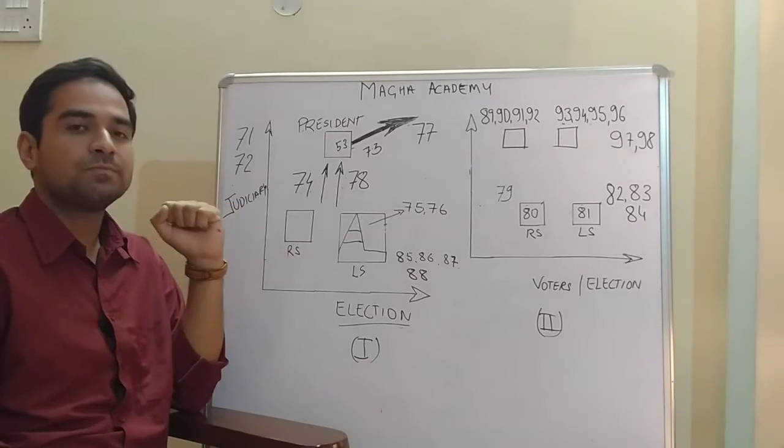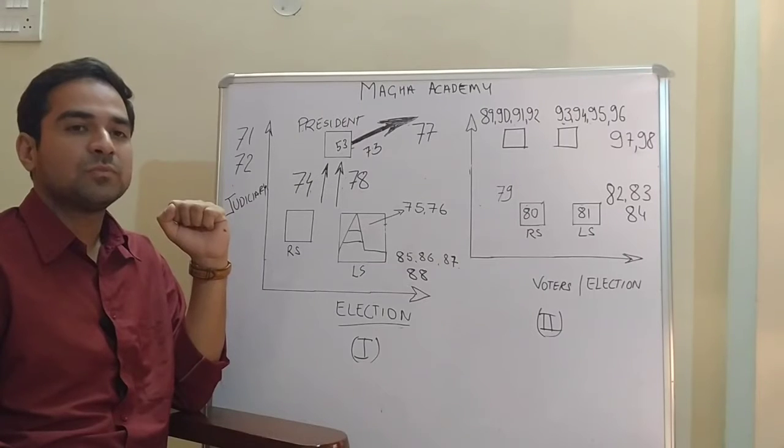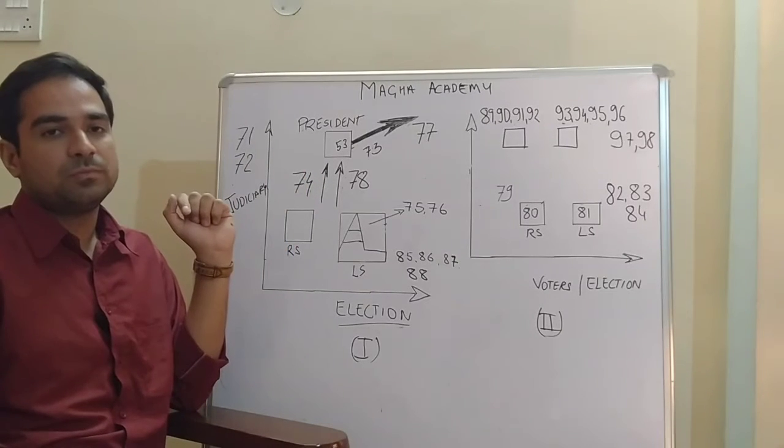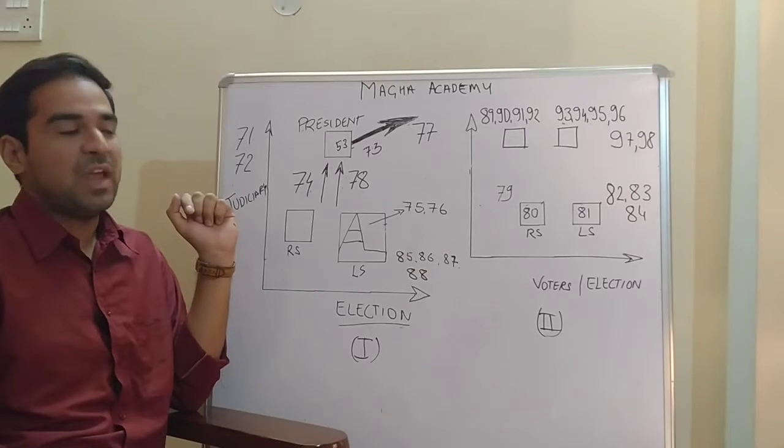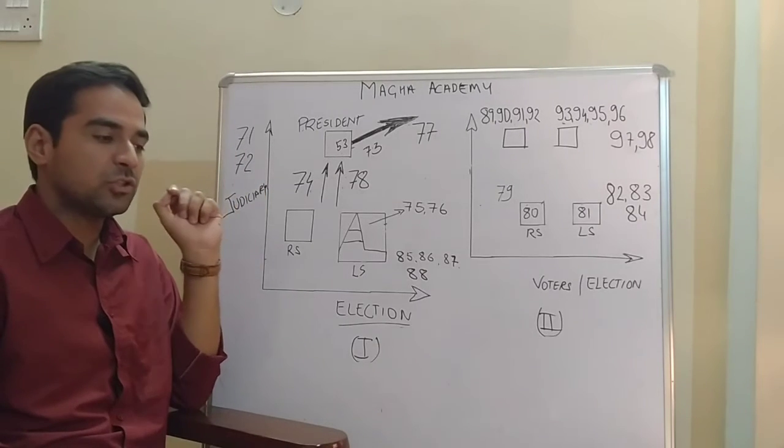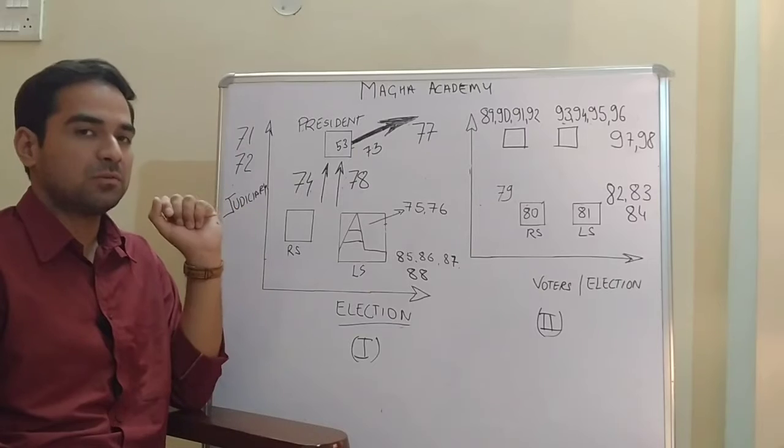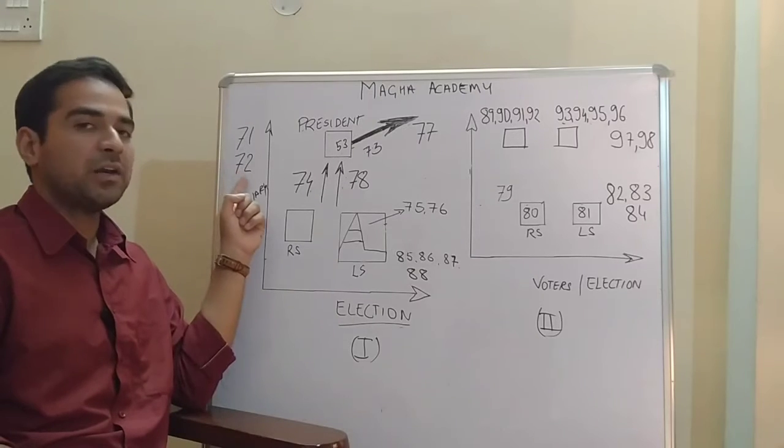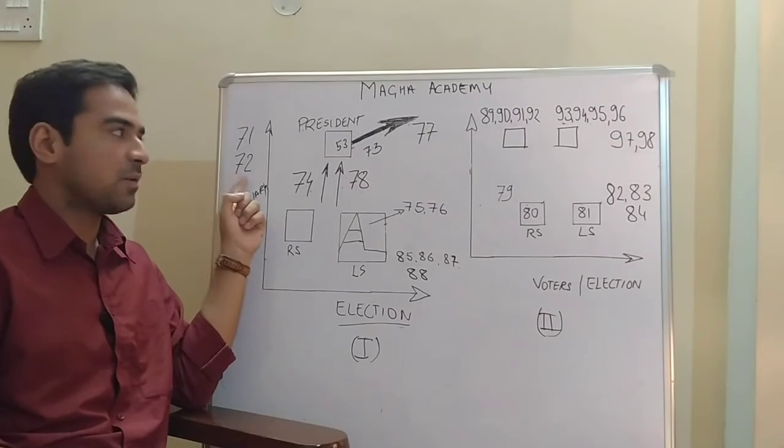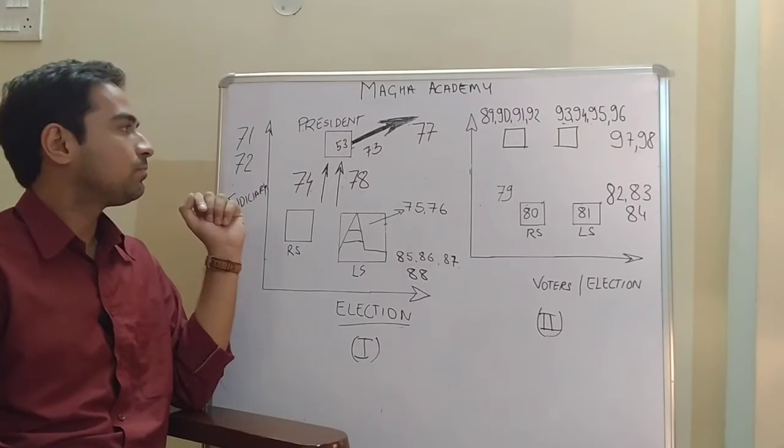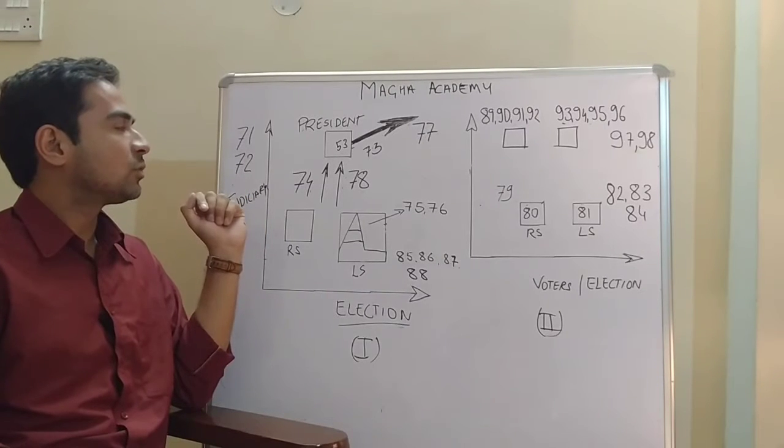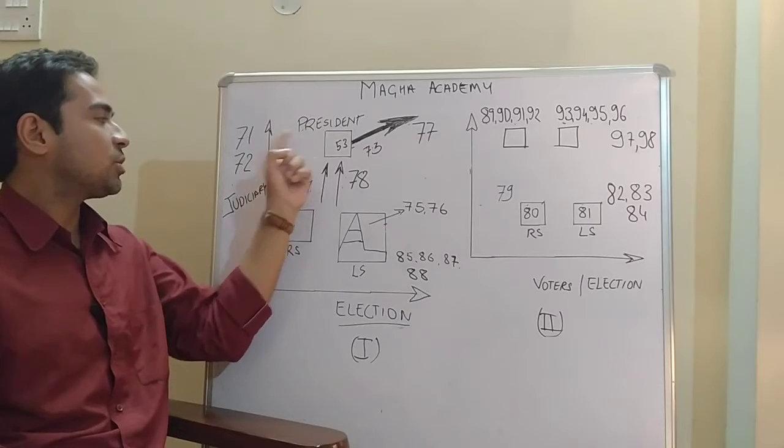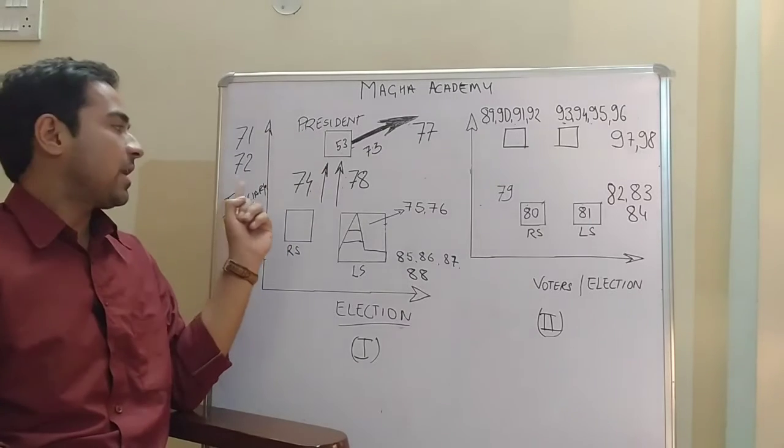All election matters, so his election matter goes to Supreme Court. And Article 72 is his judicial power in which he can pardon, respite, remit, and commute. So the first part is the relationship between President and the judiciary.